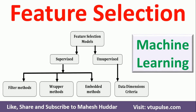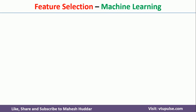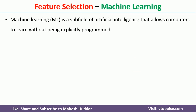Before we go to the feature selection part, first we will try to understand what is machine learning. Machine learning is a subfield of artificial intelligence that allows computers to learn without being explicitly programmed. In machine learning, we give data to the system and it will learn from that particular data, and later the learned model can be used to classify or predict future events.